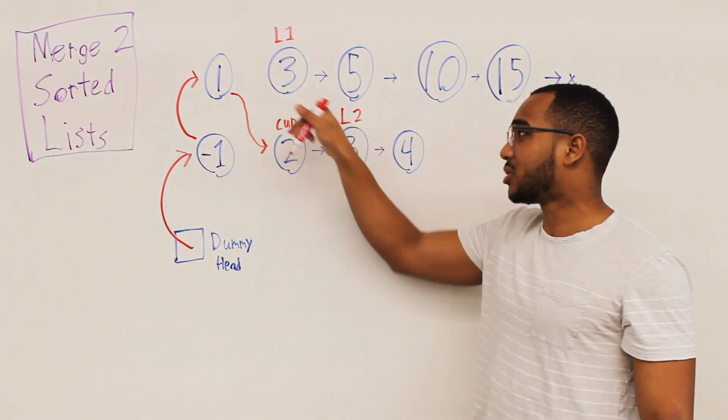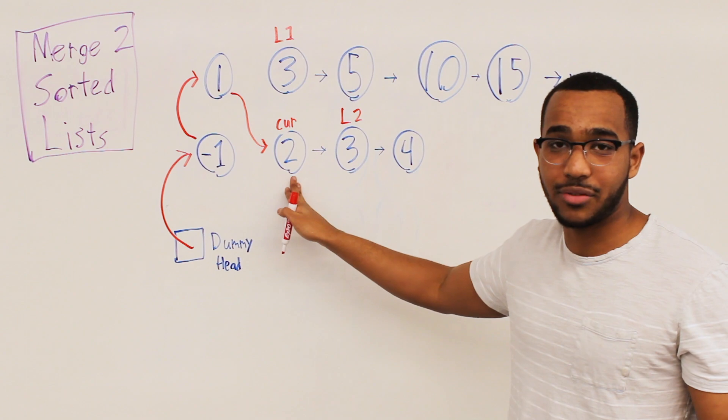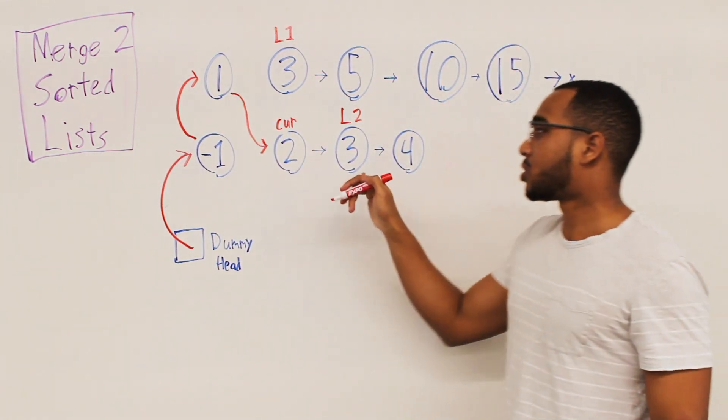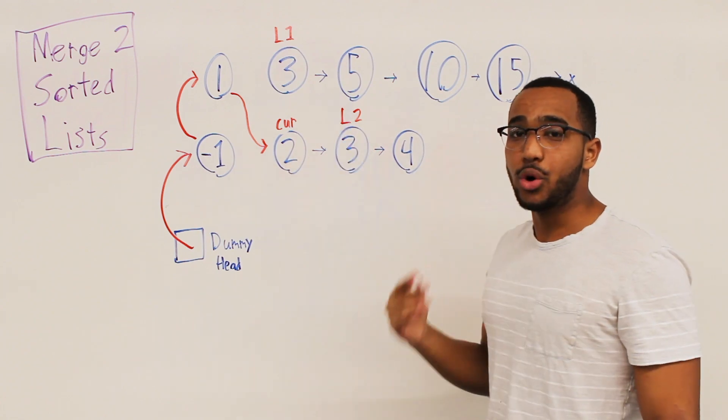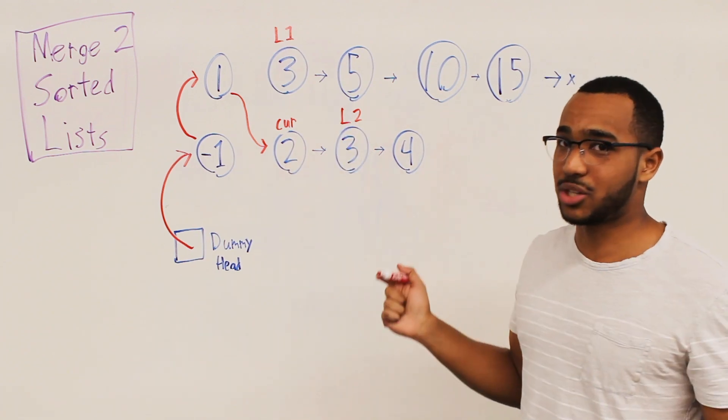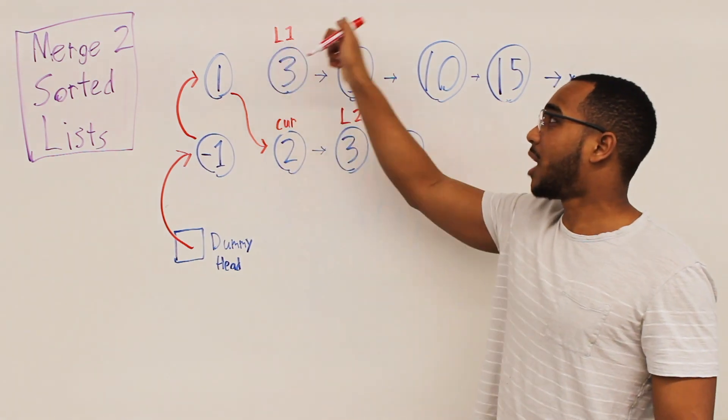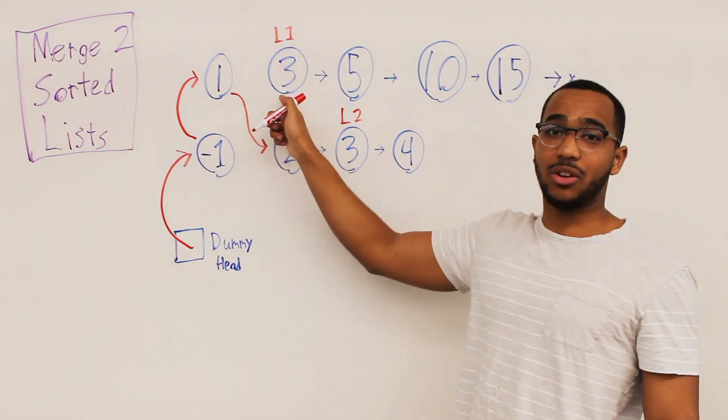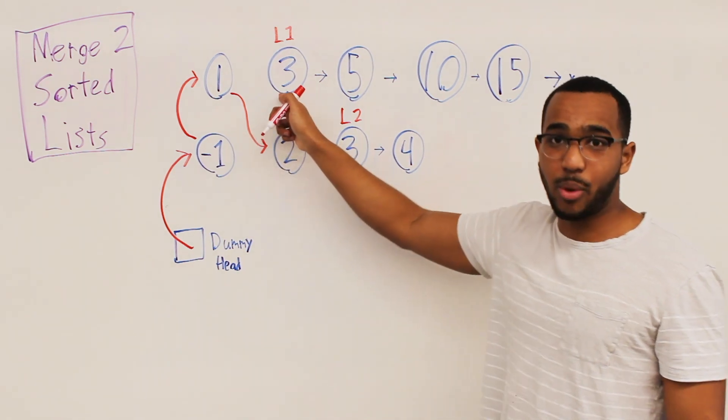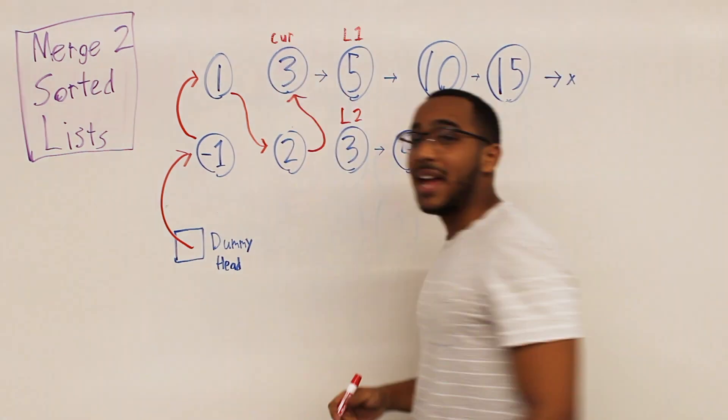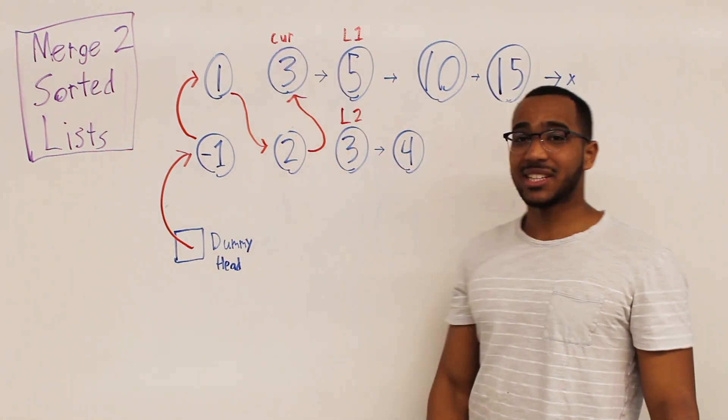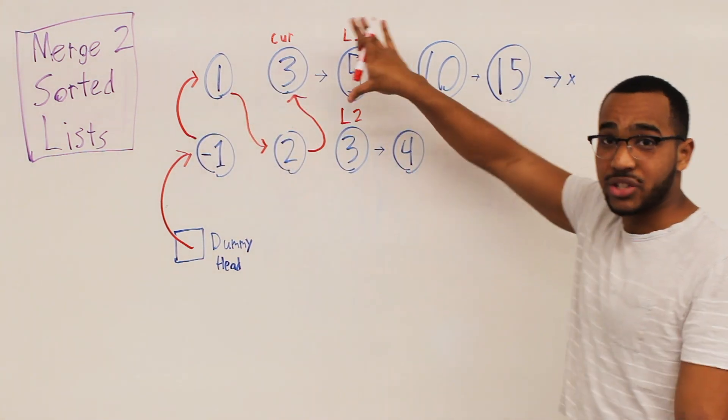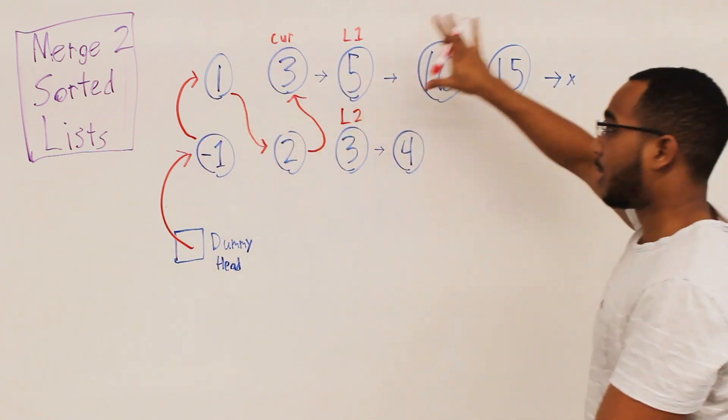So now what we do is compare list one and list two. Again cur is sitting at the tail of the sorted list. This is the sorted list. This is the stuff we still are working on. So now three and three. Who wins? So we can take it from either list. Let's just take it from list one. So what we do is list one hops here. We rewire the node that cur is sitting on to point to the node that just won. And now cur is going to point to the tail which is this node that it's about to point to. And again cur always sits at the tail of the sorted list. You see how we're building a sorted list. And now we continue our comparisons. Unprocessed territory. Processed territory. Unprocessed.